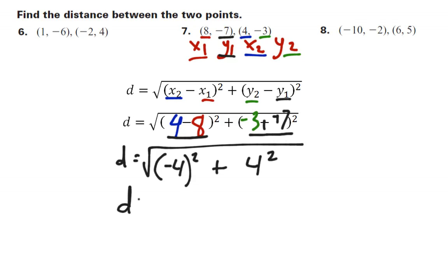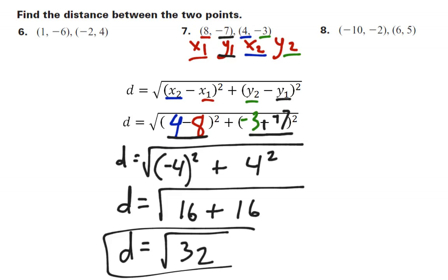And now I simplify that, and I get square root of negative 4 squared is 16. Positive 4 squared is also 16, so the answer here is going to be the square root of 32. Again, I'm not going to use my calculator to get the decimal approximation because the problem didn't ask for it. But that calculator step should be pretty straightforward.